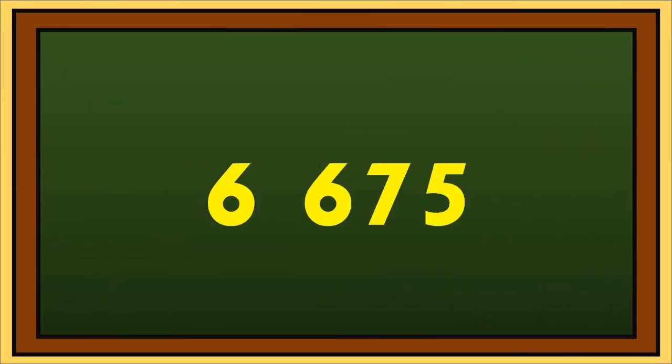Let's take a look at these numbers. Are they divisible by 5 or are they not? 6,675 is divisible by 5 because the last digit is 5. 10,003 is not divisible by 5 because the last digit is 3.